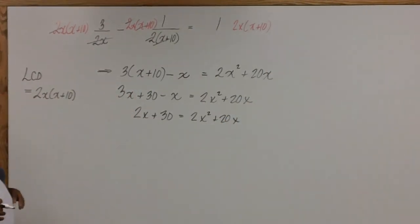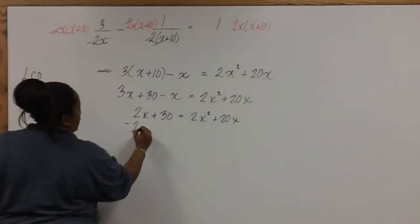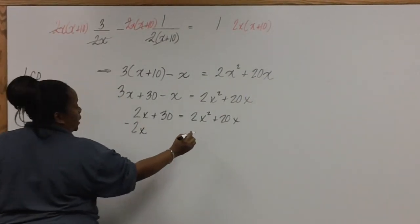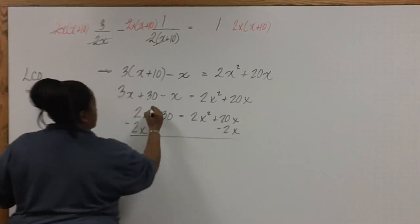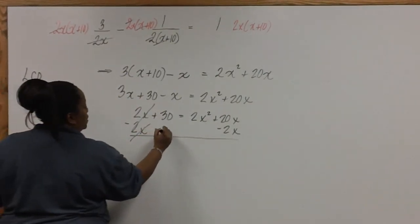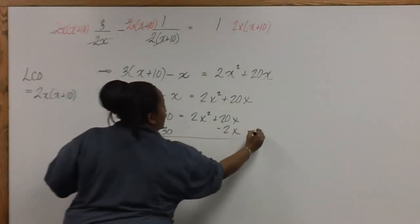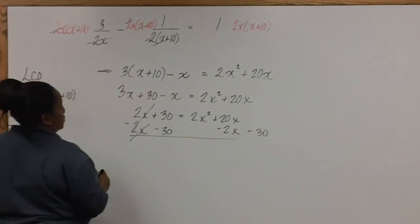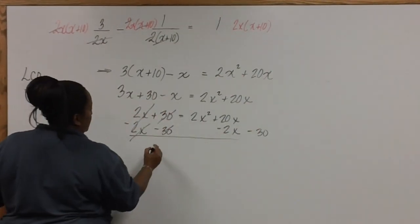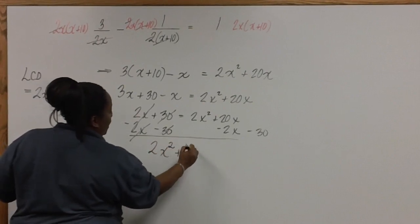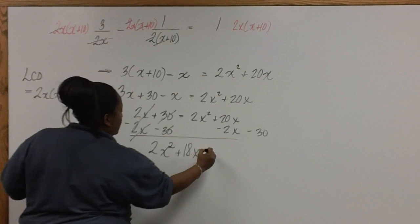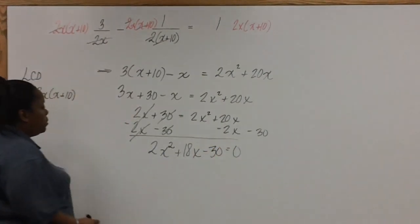Now we need to set this equal to zero. So I'll subtract 2x from both sides and I'll subtract 30 from both sides. This leaves us with 2x squared plus 18x minus 30 equals zero.